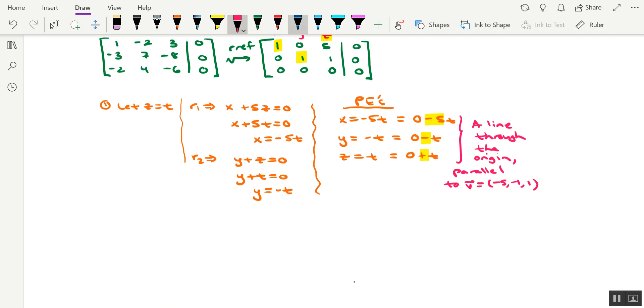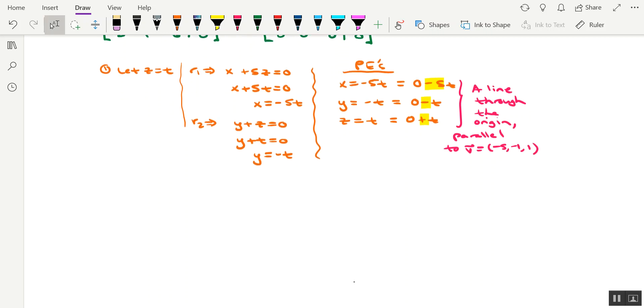Another way that you could represent the solutions to this linear system is in vector equation format. Let's say x, y, z represents the solutions, all the solutions to this linear system. Using the parametric equations defined above, we could replace x with negative 5t, y with negative t, and z with t.